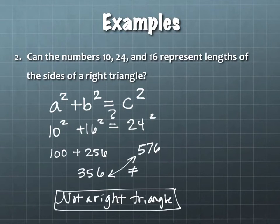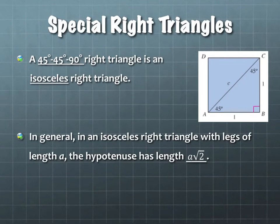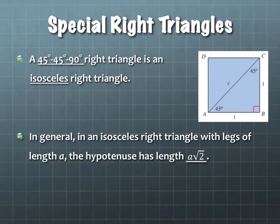The last thing we're going to do today is talk about special right triangles. You probably saw this in geometry in high school. There are two special right triangles. One of them is a 45-45-90 right triangle. These are isosceles triangles because they have two angles that are the same — 45 and 45. An isosceles right triangle with legs of length A has a hypotenuse of length A square root of 2.